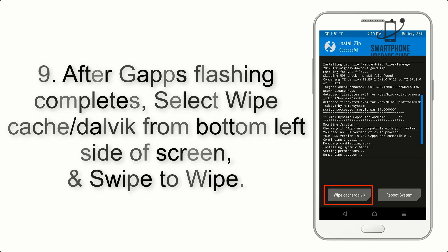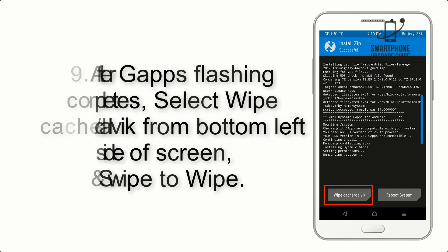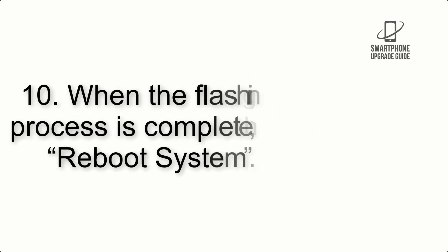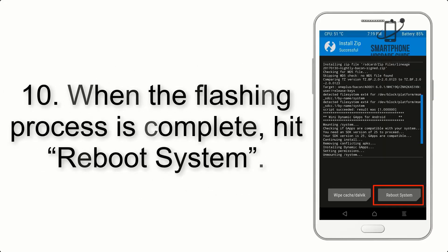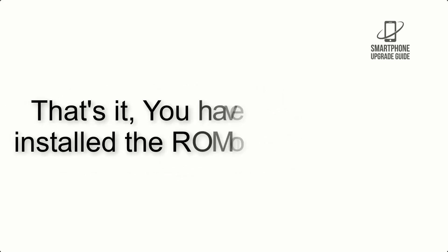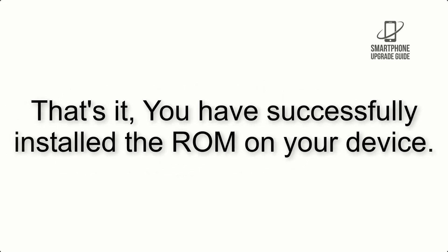Step 9: After GApps flashing completes, select Wipe Cache and Dalvik from the bottom left side of the screen and swipe to wipe. Step 10: When the flashing process is complete, hit Reboot System. That's it — you have successfully installed the ROM on your device.